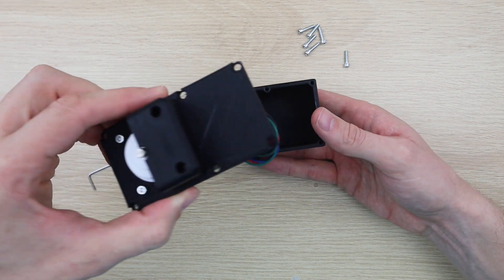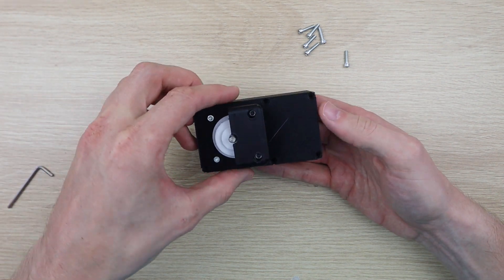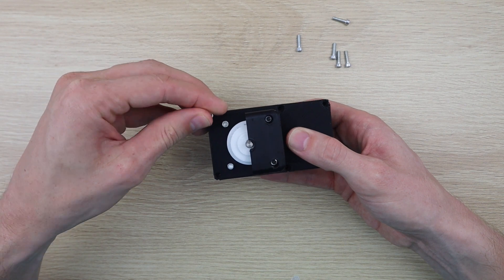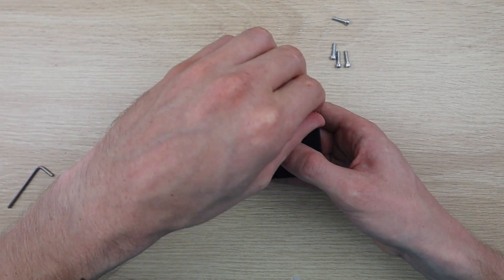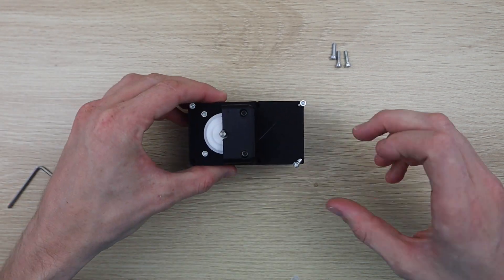The front cover screws onto the back with more M3 by 15mm screws. I've put it together here to check that everything fits correctly, but you won't need to do so until you've put your electronic components together as well.